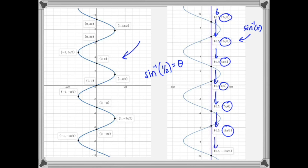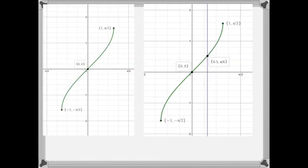Mathematically, what we've agreed on is that we trim this part so it has a one-to-one relationship and passes the vertical line test. This trimmed portion is the recognized inverse sine function. When I ask what angle has a sine of one-half, it gives a definitive answer of π/6, or 30 degrees.